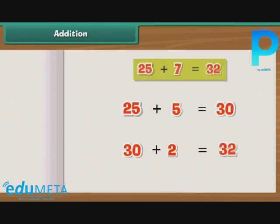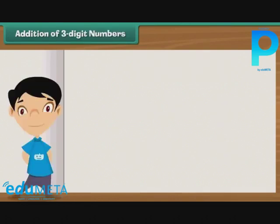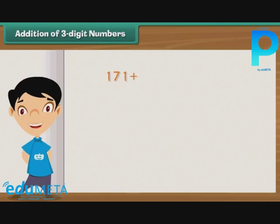Thus, the sum of 25 and 7 can be quickly calculated as 32. Let us now see how we can simplify the addition of numbers with three or more digits. Let us try and add 171, 512 and 405.